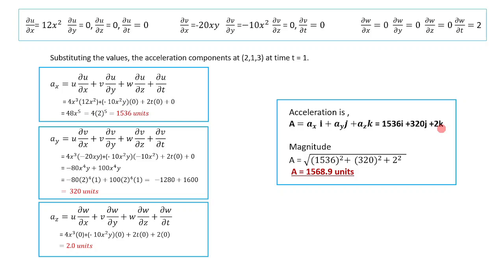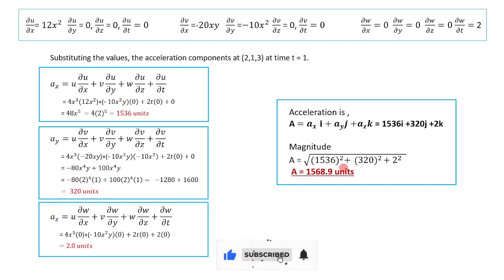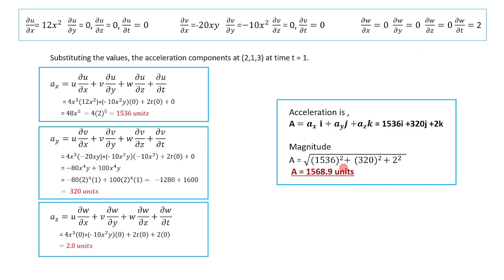To find the magnitude, similar to velocity, we take the square root of ax squared plus ay squared plus az squared at that point. Putting in the values, the acceleration magnitude comes out as 1568.9 units. Thank you.